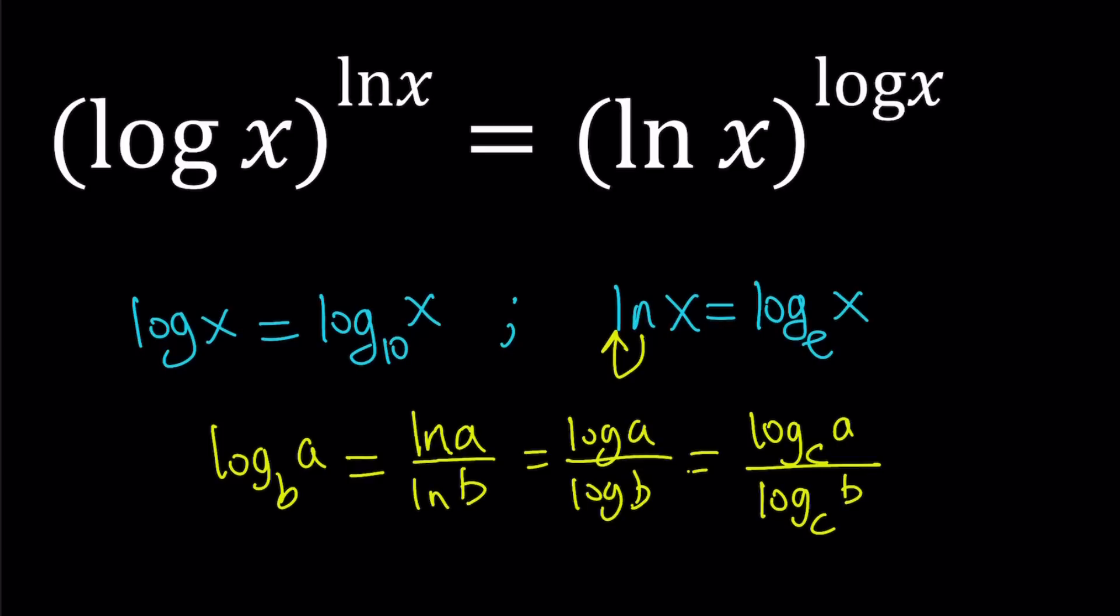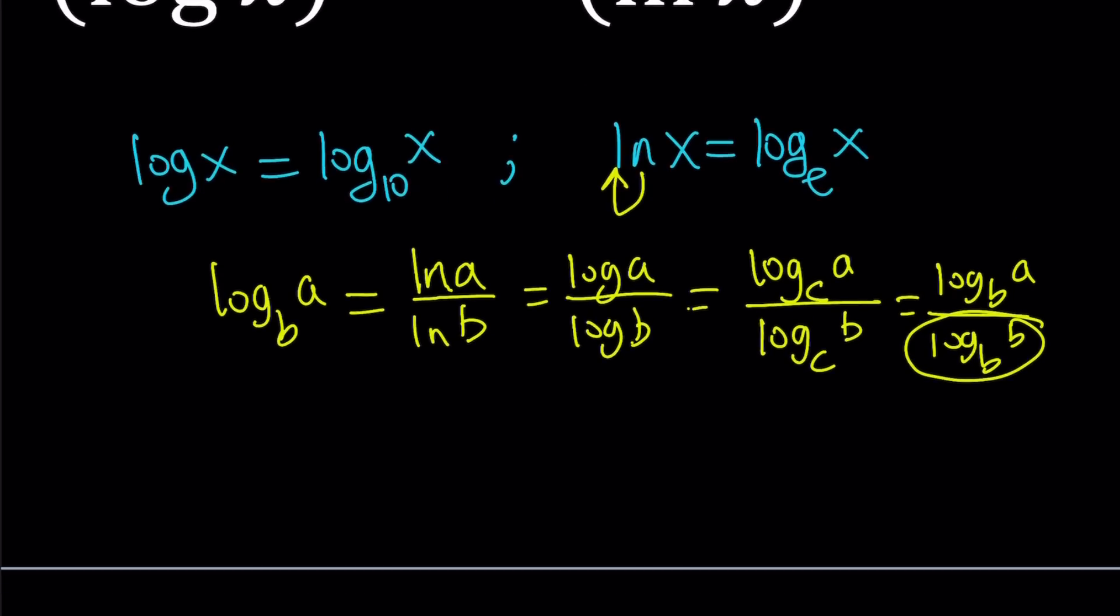And what happens if I use the same base? Then you're going to get log A over log B with the same base, this is going to be 1. So change of base actually is verified one more time. But as you can see, ln is convenient. So let's use it.